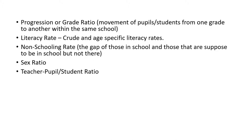We'll talk about the teacher-pupil or teacher-student ratio. We want to know how many students a teacher is going to teach at a time. For example, if a school has 500 students and 10 teachers, you divide 500 by 10 to get the ratio. In every country there is a benchmark for what the teacher-student ratio should be. However, in practice, what you find may not match the benchmark. It is important to find out the real situation so that as a planner you can determine whether to get more teachers and how to improve the teaching-learning process.